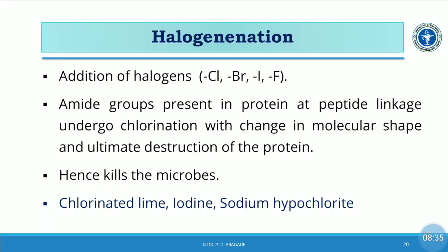The next mechanism is halogenation — the chemical reaction in which there is addition of halogens such as chlorine, bromine, iodine, and fluorine. Proteins contain amino acids joined at peptide linkages, forming amide groups. These amide groups in a protein at the peptide linkage undergo halogenation or chlorination, which changes the molecular shape and ultimately leads to the destruction of protein. For example, chlorinated lime, iodine, or sodium hypochlorite act by this mechanism.